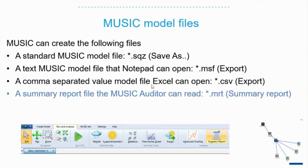Another one that's quite handy to be aware of is that you can export the data in CSV format into Excel, and that gives you a different format in Excel which is tabular. This can then be re-imported back into MUSIC, but with the caveat that you need to bring in the climate data separately. This is quite useful if you want to bulk edit a lot of parameters in MUSIC. It wasn't part of the training, but it's useful to know.